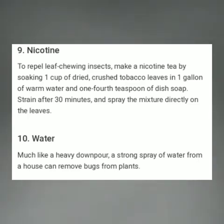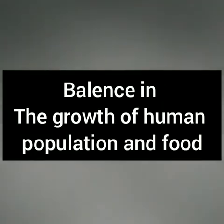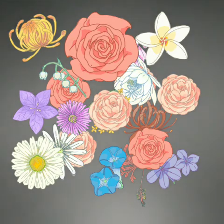And the last method is water. Much like a heavy ground pour, a strong spray of water from a hose can remove bugs from plants. Since we are using natural fertilizers and homemade pesticides, which are free or low cost, we can overcome the scarcity of food and there would be a balance in the growth of population and food. If you like my video, please give a thumbs up and share as much as possible. Thanks for watching.